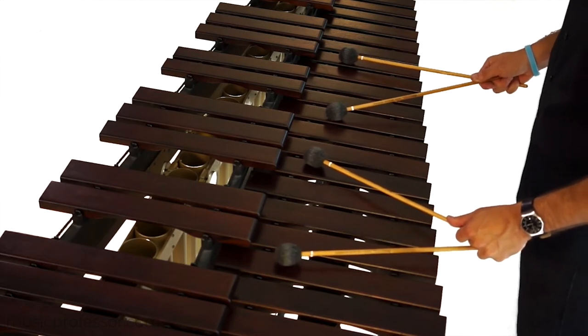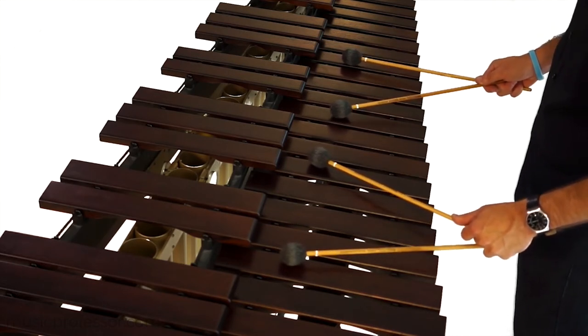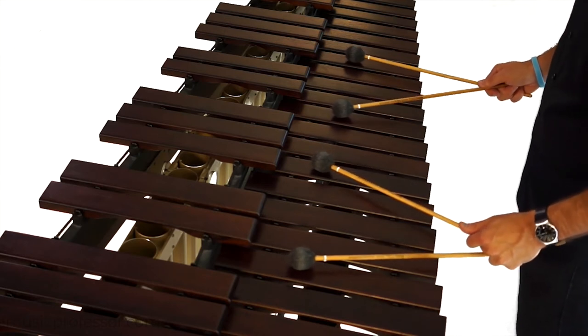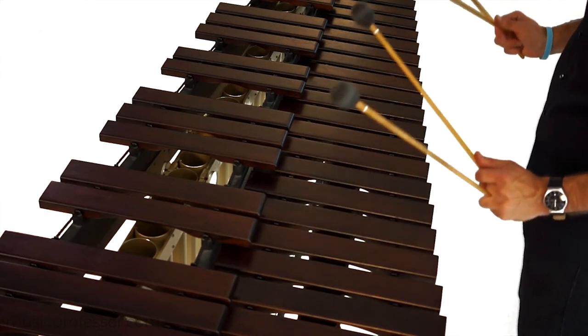Then you're simply going to do normal marimba strokes, except you have four mallets: up and down, up and down. I'm going C-G, C-G, open fifths. It's just kind of a nice relaxing interval, so I'm going up, down.